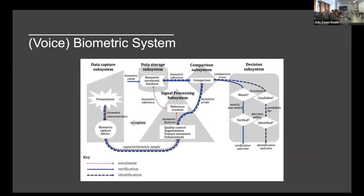I tend to always show this slide — it's the official ISO diagram for what a biometric system is. I've put 'voice' in brackets because it applies to all modalities, but as you can see it's divided into different subsections. When it comes to voice, what we like to do is extract features from the audio recording. The feature we usually use is called Mel Frequency Cepstral Coefficients, which takes into consideration things like pitch, tone, cadence, and the person's rhythm.